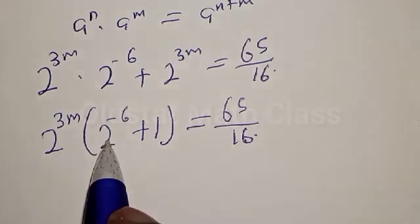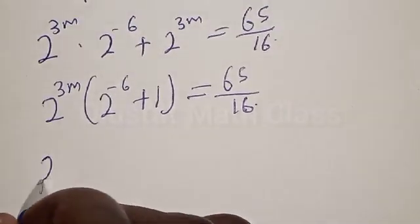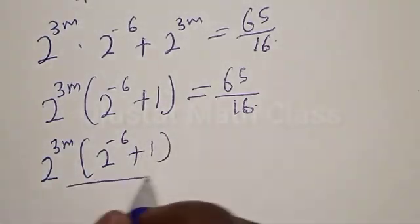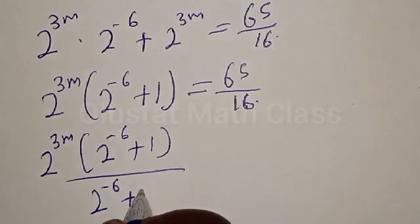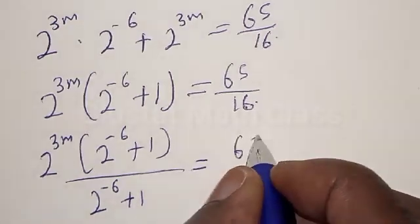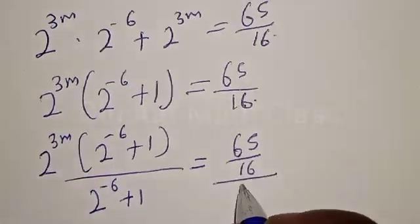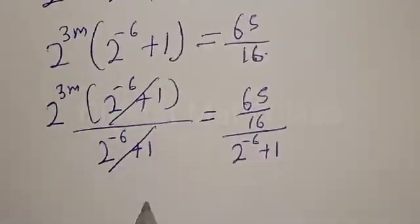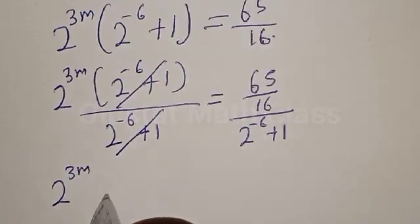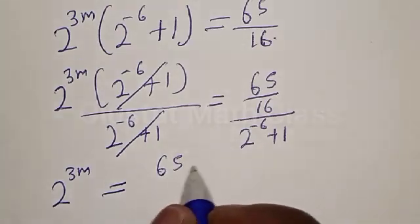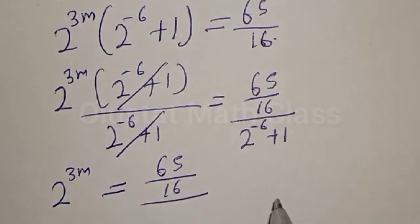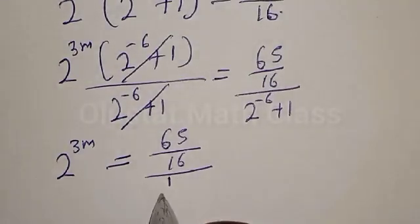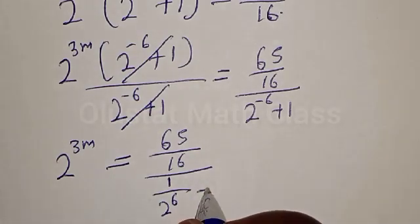Now let's divide both sides by (2 raised to the power minus 6 plus 1). We have 2 raised to the power 3m equals 65 divided by 16, divided by (2 raised to the power minus 6 plus 1). The left side simplifies, then 2 raised to power minus 6 can be rewritten as 1 over 2 raised to the power 6, plus 1.